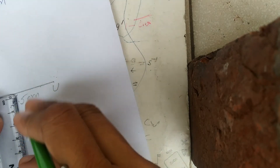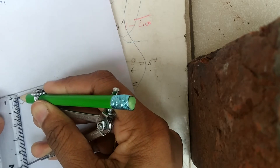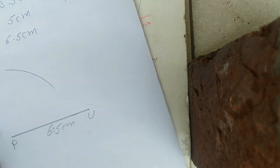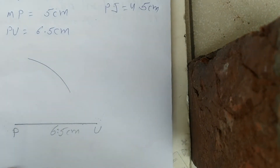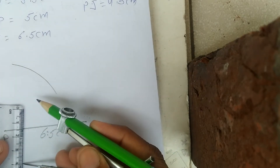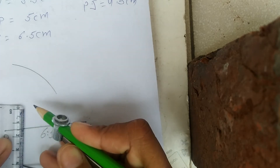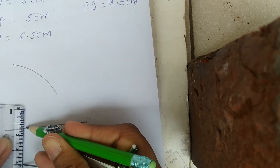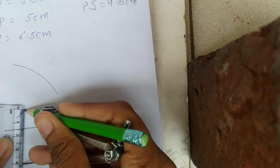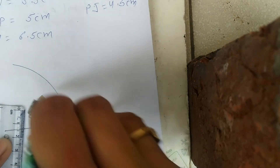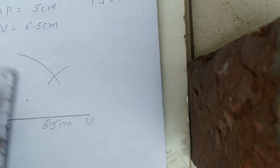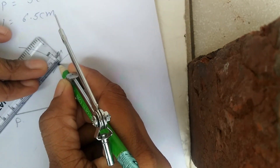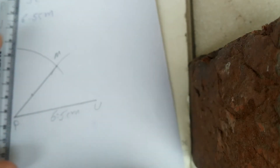PU ko base manke hum PM draw karenge — kitna hai 5 cm. Hum 5 cm ka compass open karenge. Dekho 5 cm ka compass ho gaya, P se ek arc laga lete hain. Aise hi U se M ke liye 4 cm ka compass open karenge. 4 cm compass open kiya, U ko center manke arc cut kar diya — jahan intersect hote hain us point ko hum M naam denge. M aur P ko join karenge, M aur U ko join karenge.